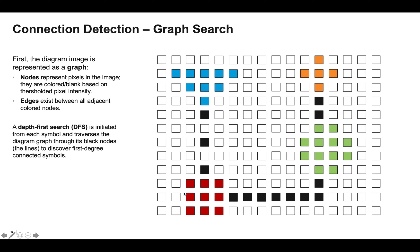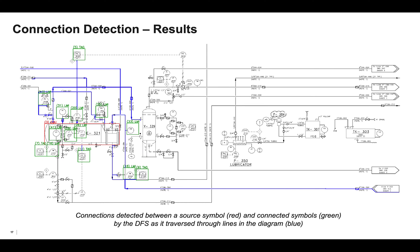We limit connections up to the first degree, so this red symbol will be connected to the blue symbol and the green symbol, but not this orange symbol. Here are the results of connection detection on a diagram in the test set. Here we see connections detected between a source symbol, shown in red, and other symbols shown in green, by the depth-first search as it traverses through the lines in the diagram shown in blue. So here, for example, the DFS tried to go down this path, but apparently didn't find any symbols here, so it just terminated. But it did find all these green symbols in its path, so the red symbol is identified as connected to all of these green symbols.